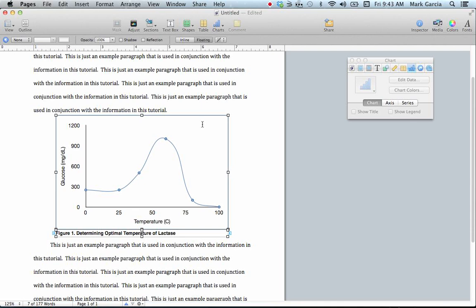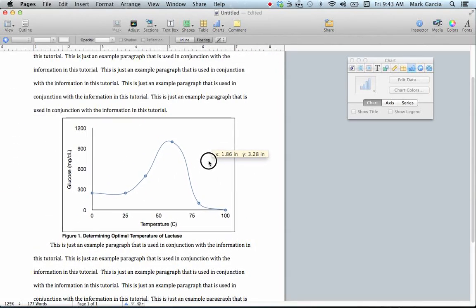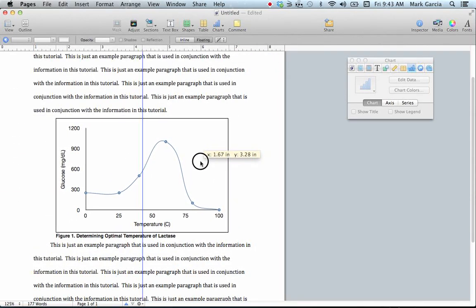And I'm going to again press Command, Option, G. And now my text box is also grouped with my graph.